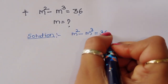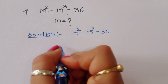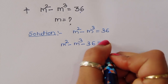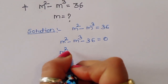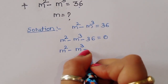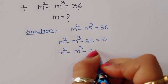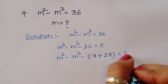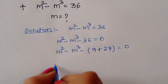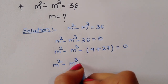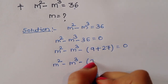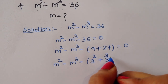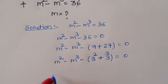m squared minus m cubed is equal to 36. We can write this as m squared minus m cubed minus 36 is equal to 0. Now we can write 36 as 9 plus 27, so m squared minus m cubed minus 9 plus 27 is equal to 0. We can write 9 as 3 squared and 27 as 3 cubed.